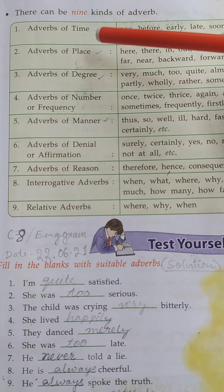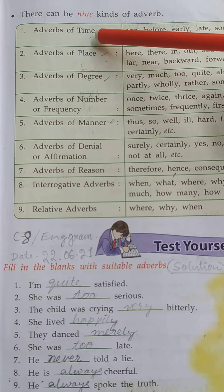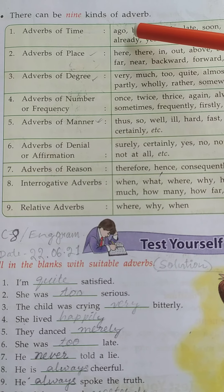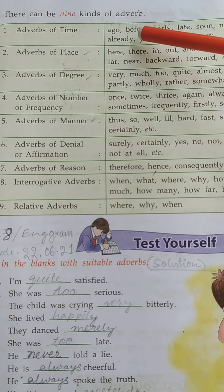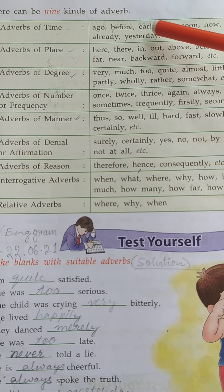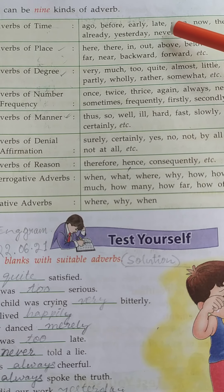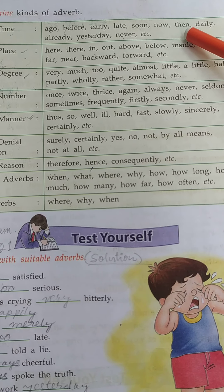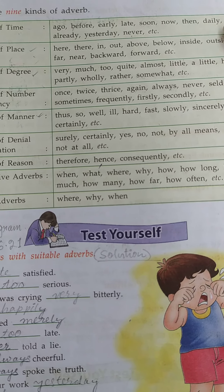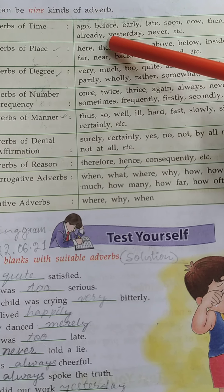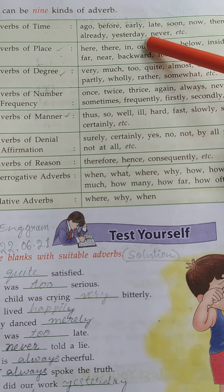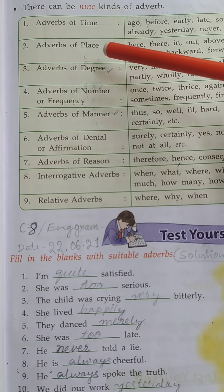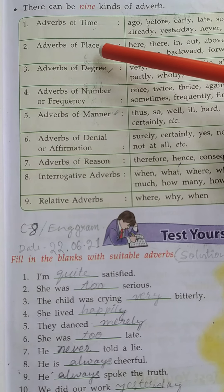Number 1: Adverb of time. The examples are ago, before, early, late, soon, now, then, daily, already, yesterday, never, etc.